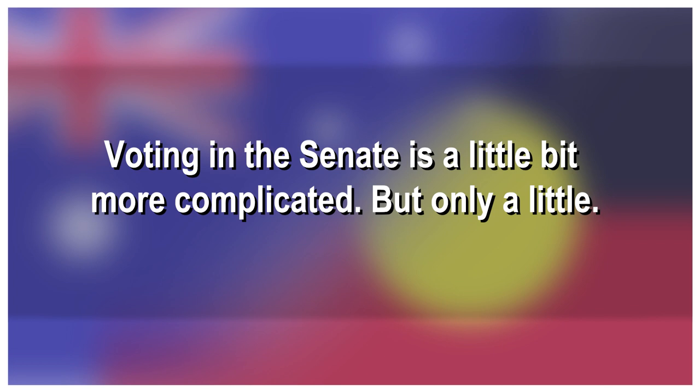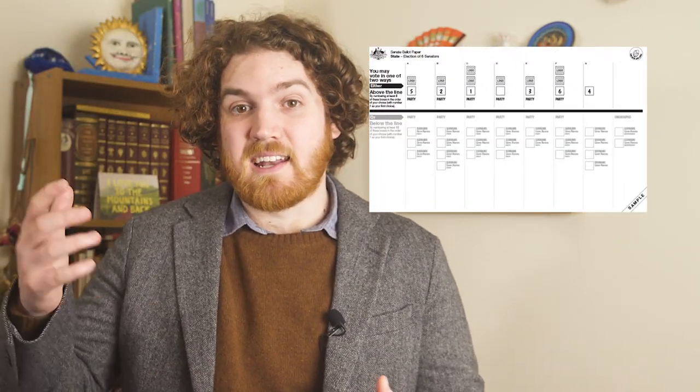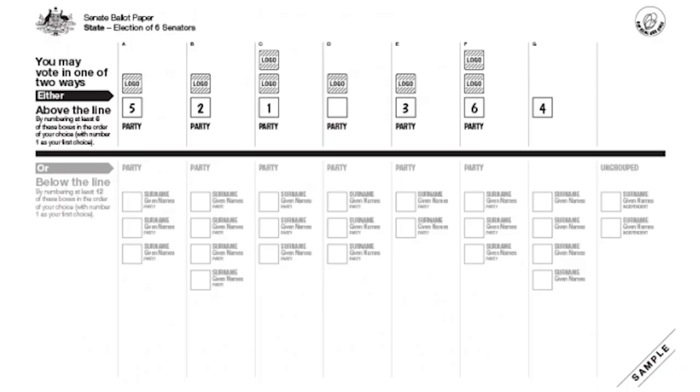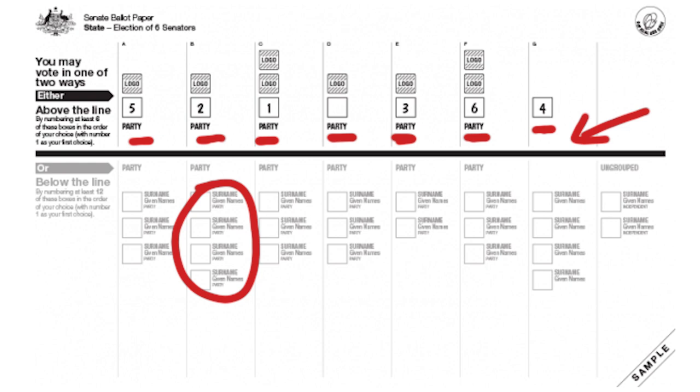Voting in the Senate is a little bit more complicated but only a little. The Senate paper is different — it's also a lot bigger, and there are two different ways in which you can fill it out. Usually elections for the House of Representatives and the Senate are at the same time. When you go to a polling booth you will likely be handed a large white piece of paper that says 'Senate ballot paper' along with written instructions. On the top part are a series of boxes ordered horizontally with a party name attached to them. There is also a thick black line that divides the paper into two. Below the line are more boxes in vertically descending columns underneath those party names, with candidate names attached.